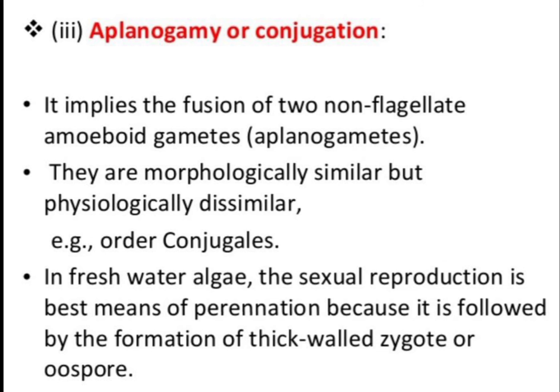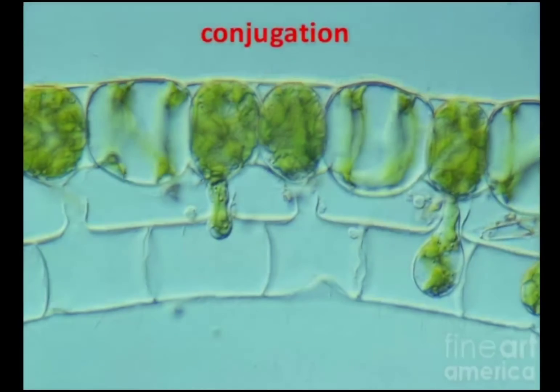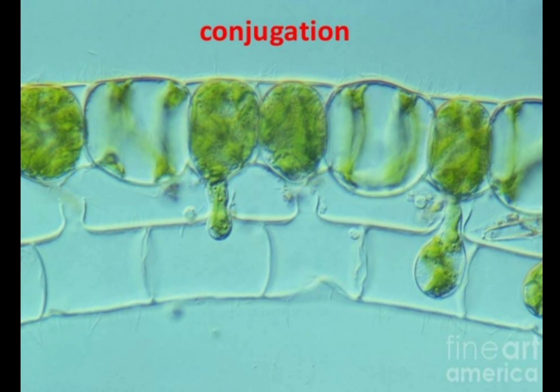Aplanogamy, or conjugation, implies the fusion of two non-flagellate amoeboid gametes called aplanogametes. They are morphologically similar but physiologically dissimilar. An example is the order Conjugales in freshwater algae. Sexual reproduction is the best means of perennation because it is followed by the formation of a thick-walled zygote or oospore.